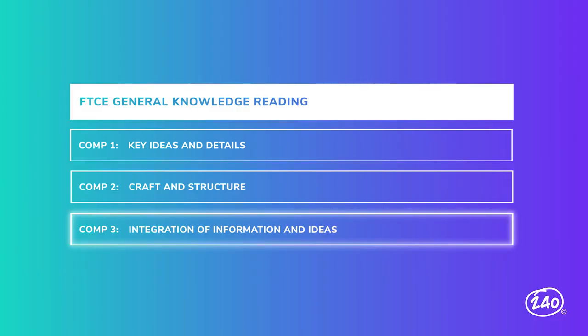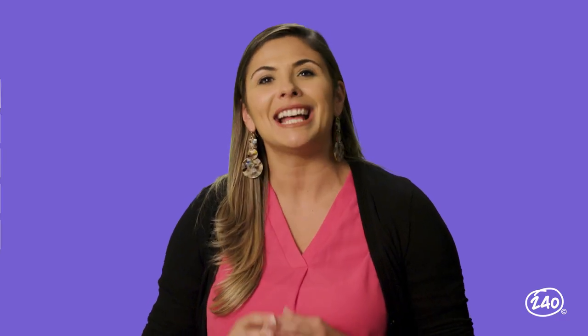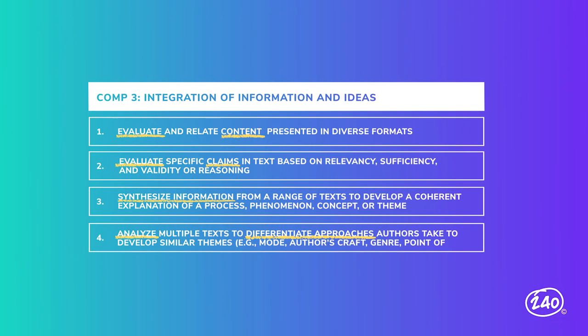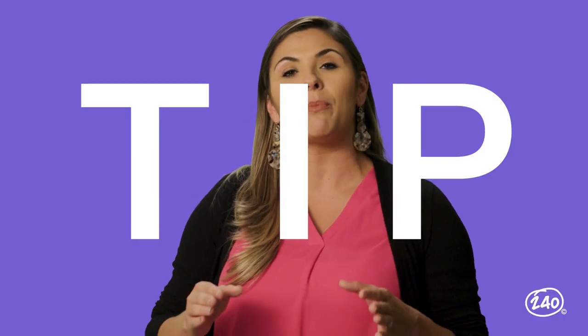Let's move on to the competency worth the next biggest chunk at 35%. Competency three covers integration of information and ideas. Looking at the skills that go along with it, I see some higher-level Bloom's taxonomy words: evaluate, synthesize, and analyze — we're going to do some deep thinking here. Questions from this competency also involve working with multiple texts at the same time. One key skill is to evaluate specific claims. Claims are points made in the text, and one way you'll be asked to evaluate them is by determining whether they are fact or opinion.